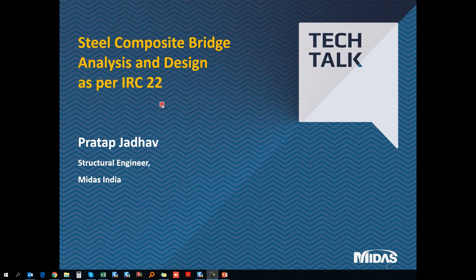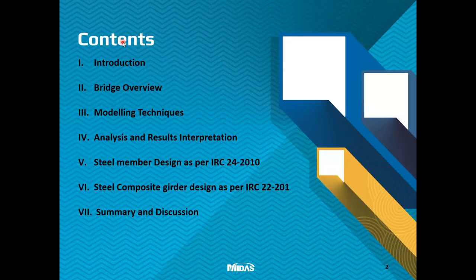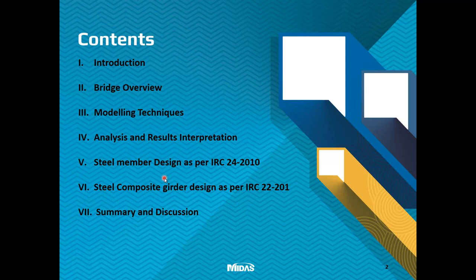We will also discuss about the design implementation as per IRC 24 2010. The webinar covers the introductory part of modeling to design using Midas Civil, then bridge overview including the model configuration. Next are the different types of modeling tools available in Midas Civil, different types of loads like moving load definition and thermal loads, how to extract results, and certain parameters which we need to pre-define before the analysis. Then coming to the design part: steel member design for cross bracings as per IRC 24 2010, and girder design for the main composite girders as per IRC 22 2015, followed by summary and discussion.